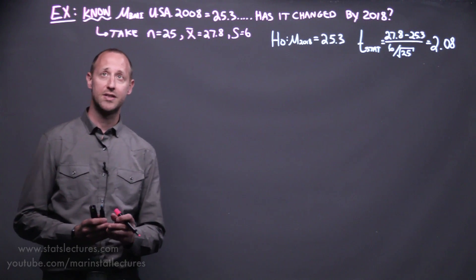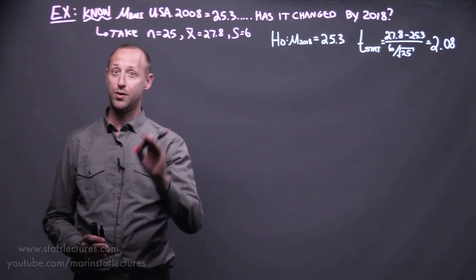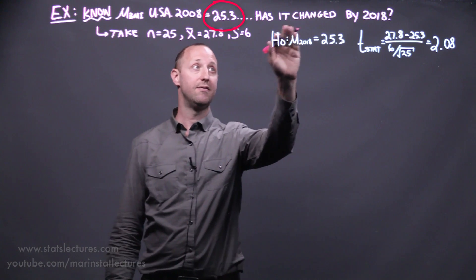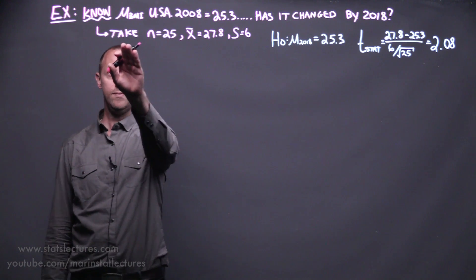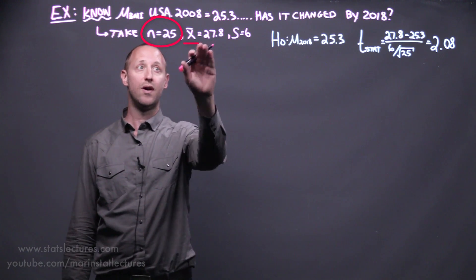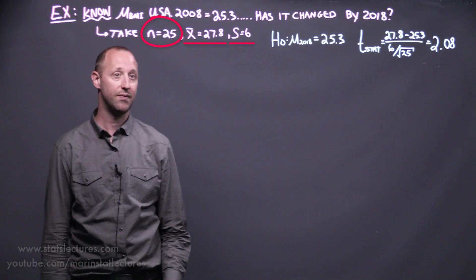Previously we worked through an example where we said suppose we know that the mean BMI in the US in 2008 is 25.3 and we want to check if it has increased by 2018. We take a sample of 25 individuals from the population, we found a sample mean of 27.8 and a sample standard deviation of 6.